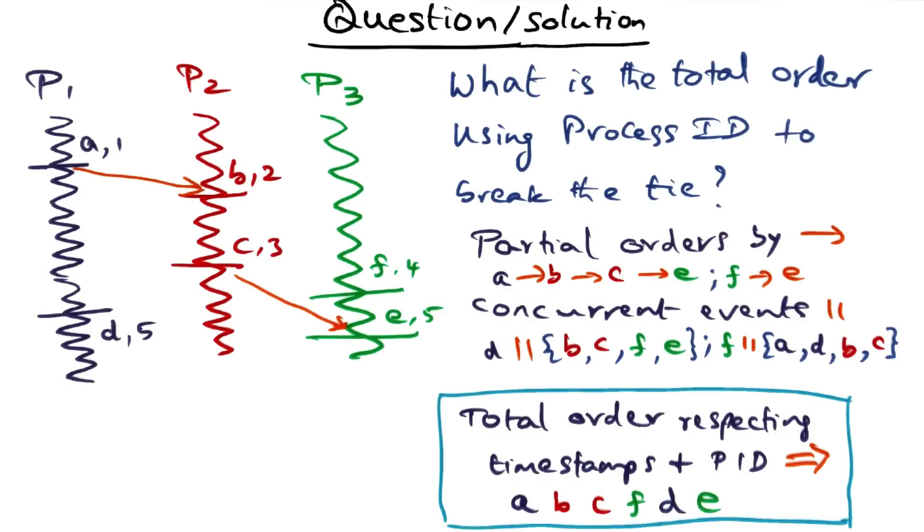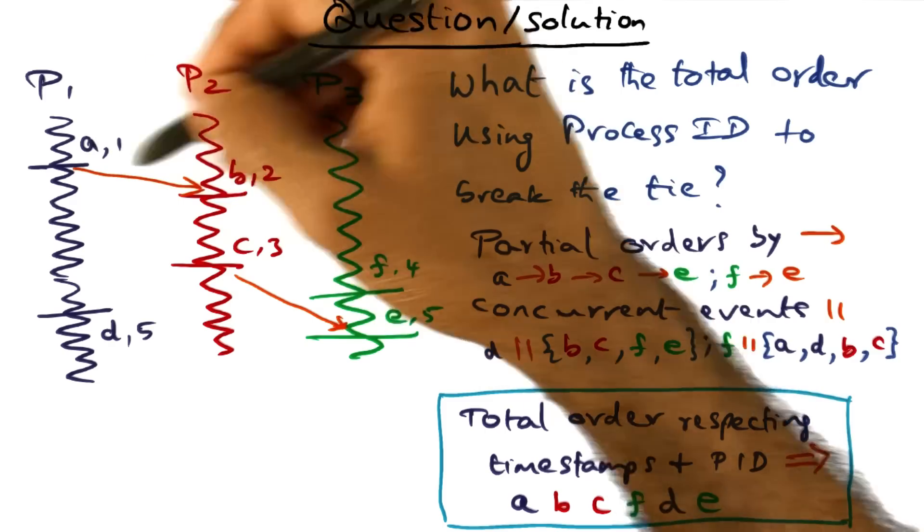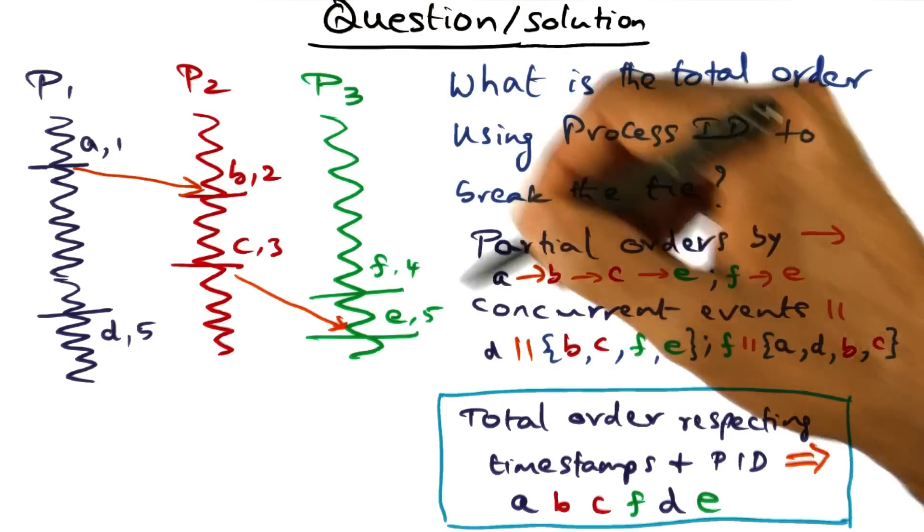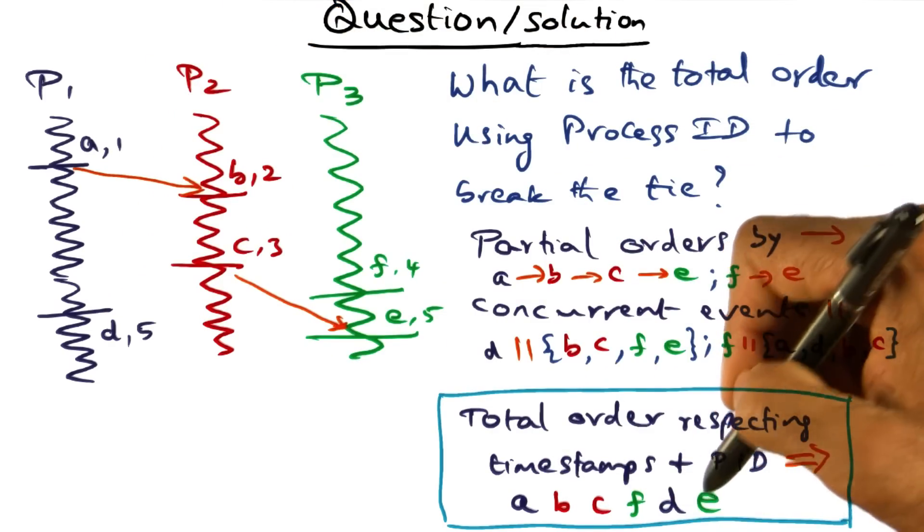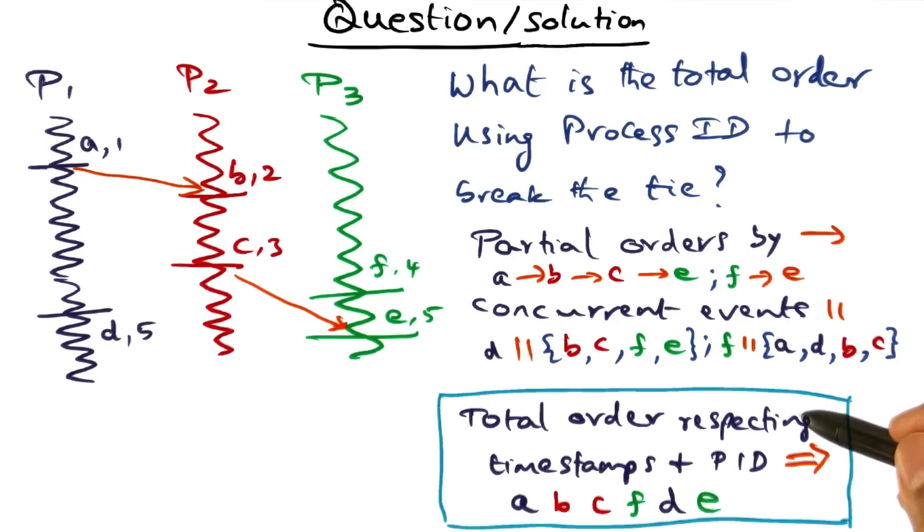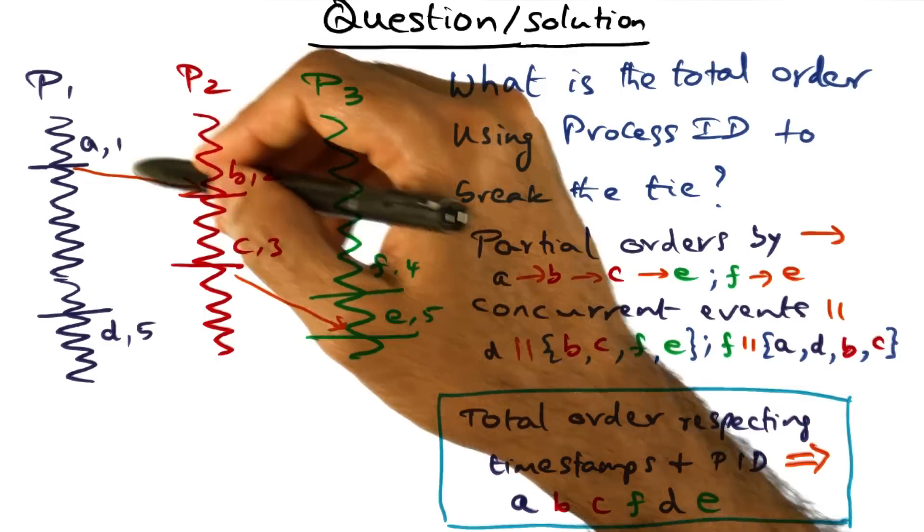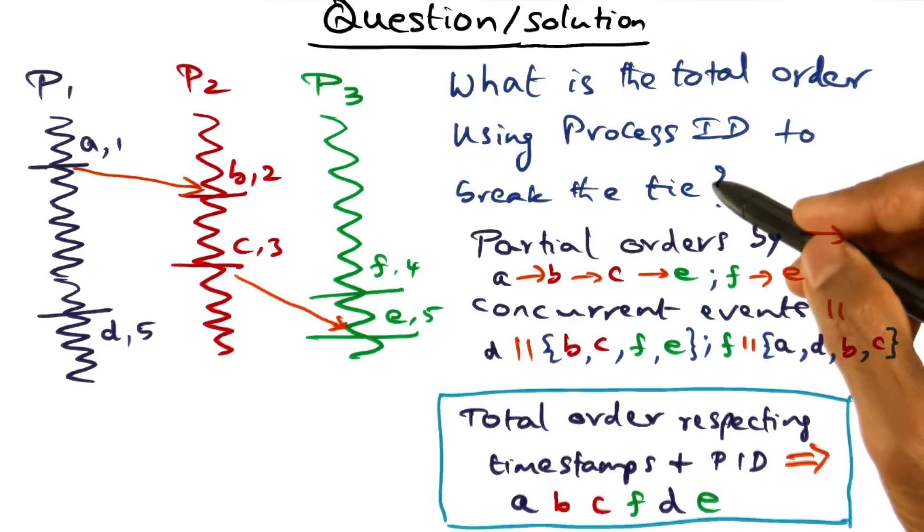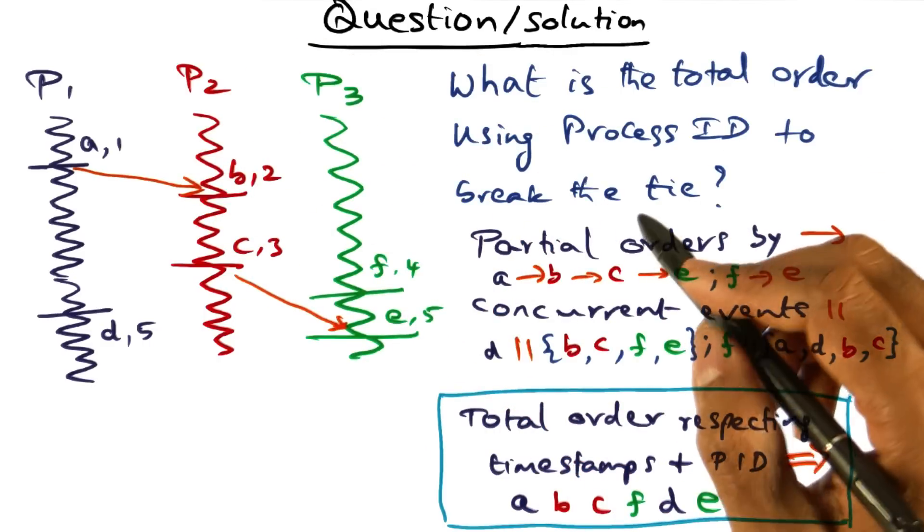So the final ordering that we end up with, the total order that we end up with is A, B, C, F, and then D, and then E. So that's the total order that we come up with. Respecting the logical timestamp associated with the events and breaking the tie using the process ID.